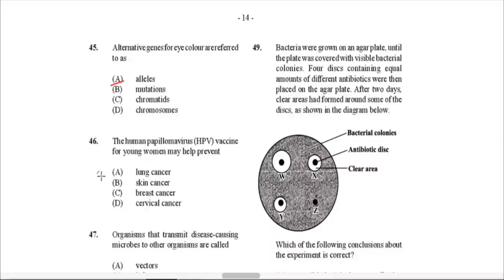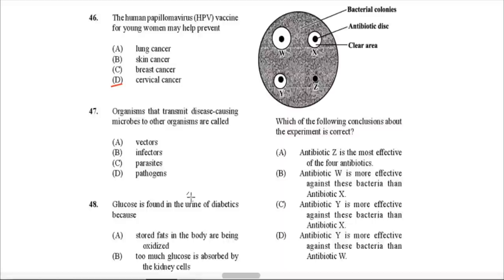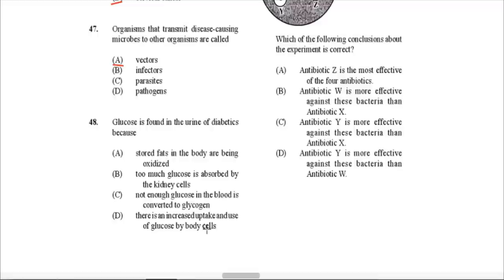Question 46: The human papillomavirus (HPV) vaccine for young women may help prevent which cancer? The HPV vaccine is meant to prevent cervical cancer. Out of the cancers listed, it is cervical cancer that it is supposed to prevent. Question 47: Organisms that transmit disease-causing microbes to other organisms are called vectors. They actually carry and transmit pathogens to other organisms — like houseflies, mosquitoes, rats, et cetera.